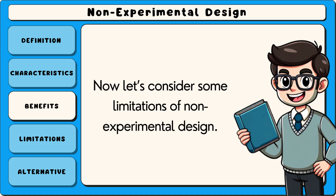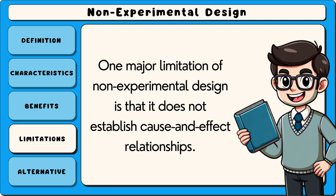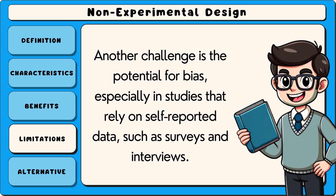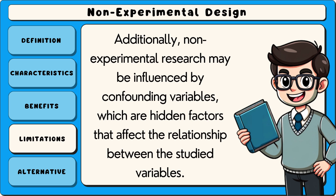Now let's consider some limitations of non-experimental design. One major limitation is that it does not establish cause-and-effect relationships. Because variables are not controlled or manipulated, it is difficult to determine whether one factor directly influences another or if external factors are responsible for observed patterns. Another challenge is the potential for bias, especially in studies that rely on self-reported data, such as surveys and interviews. Additionally, non-experimental research may be influenced by confounding variables, which are hidden factors that affect the relationship between the studied variables.